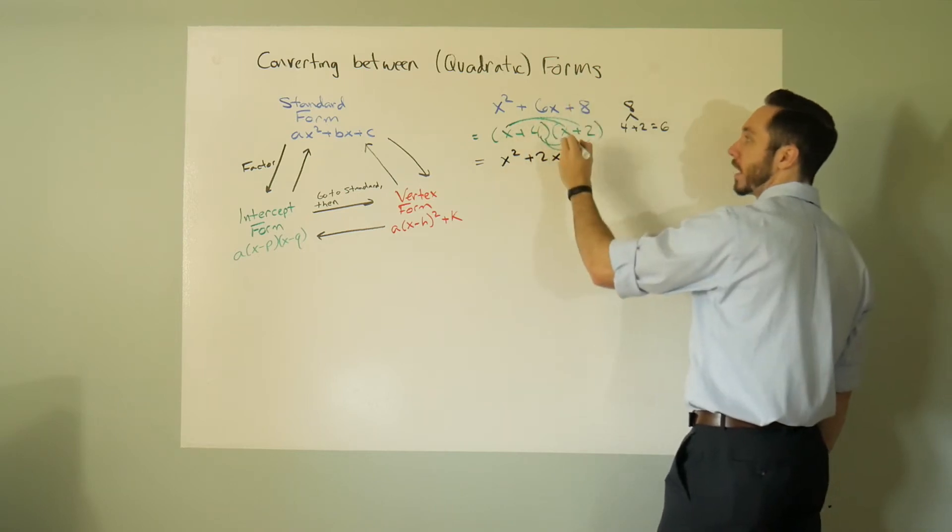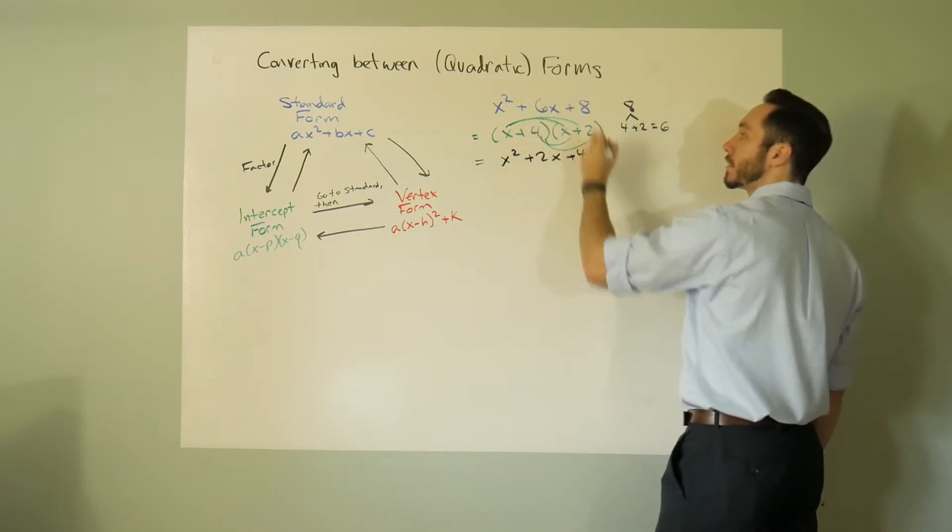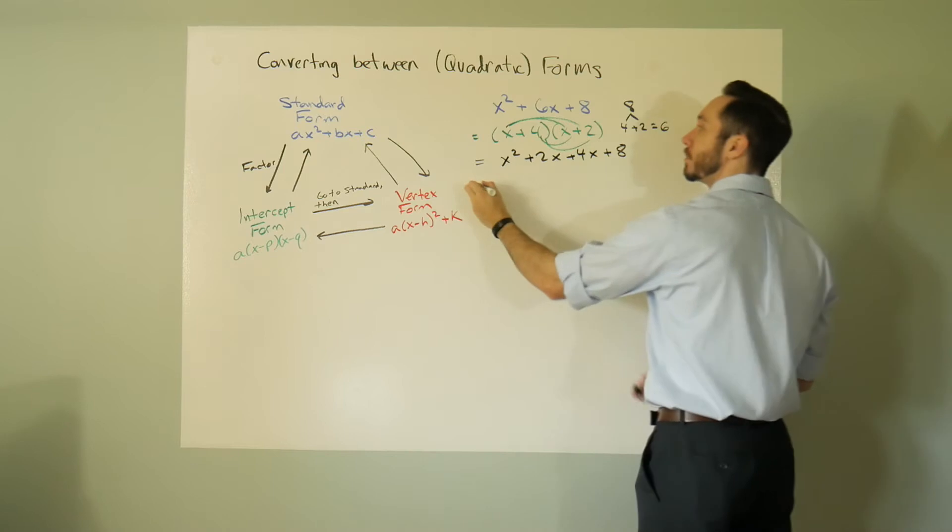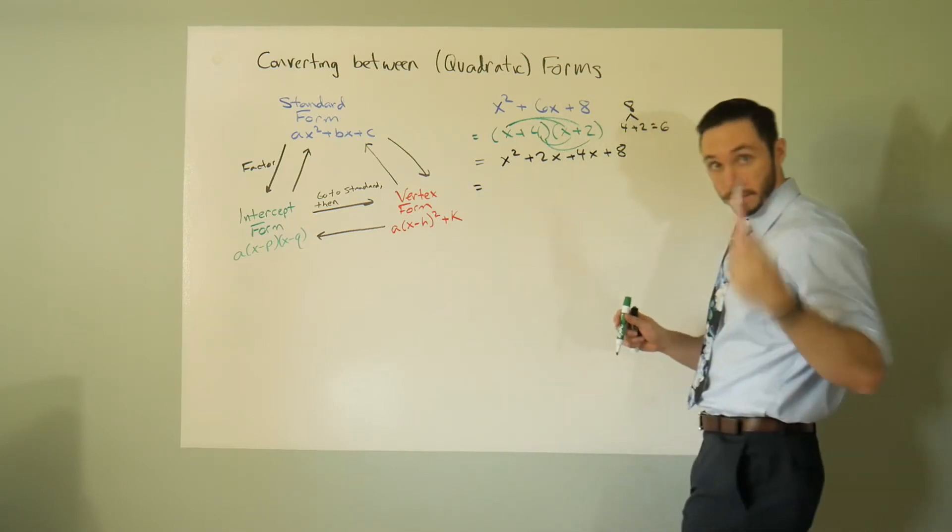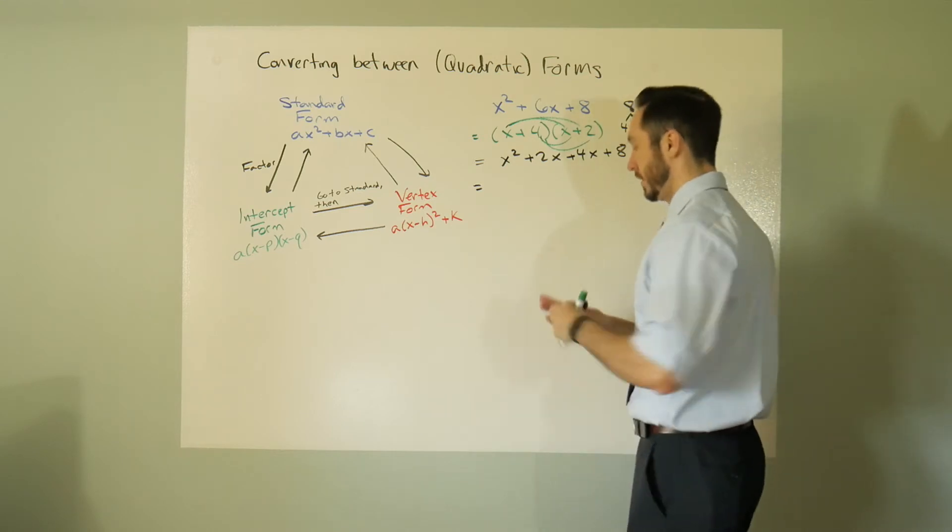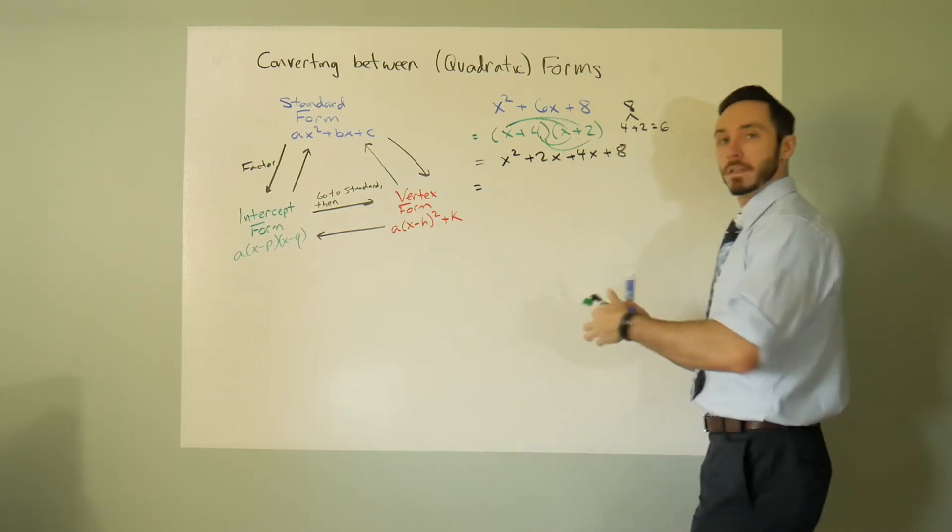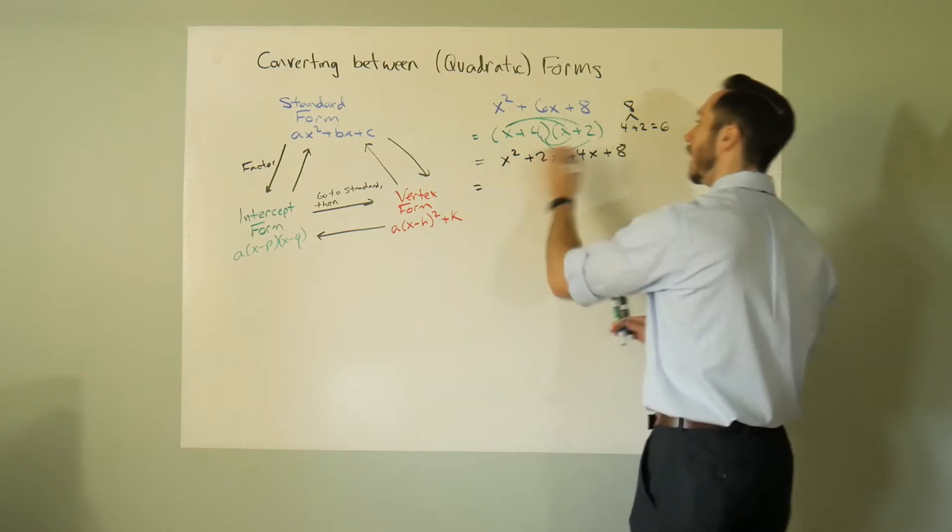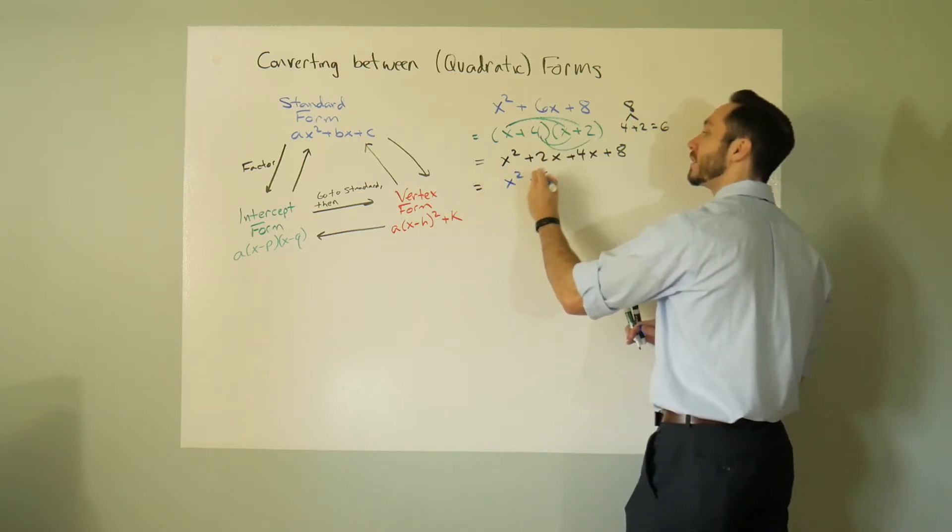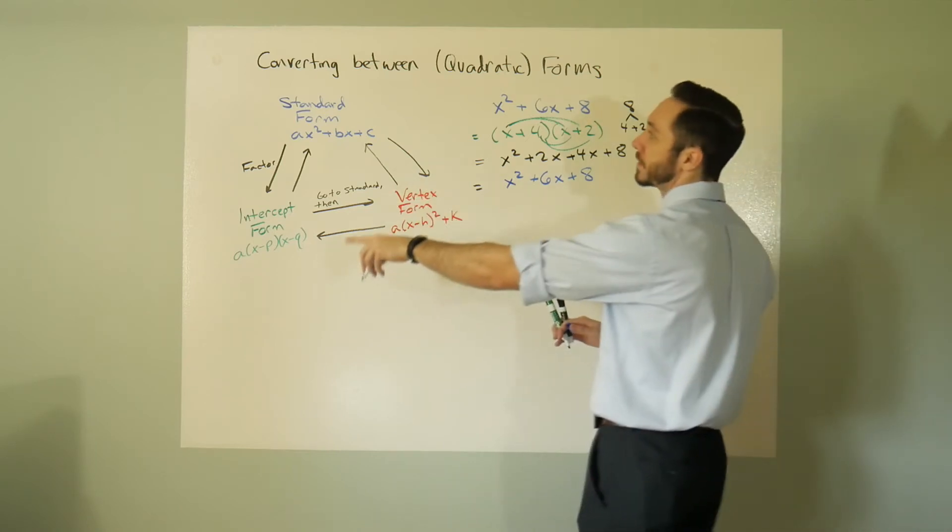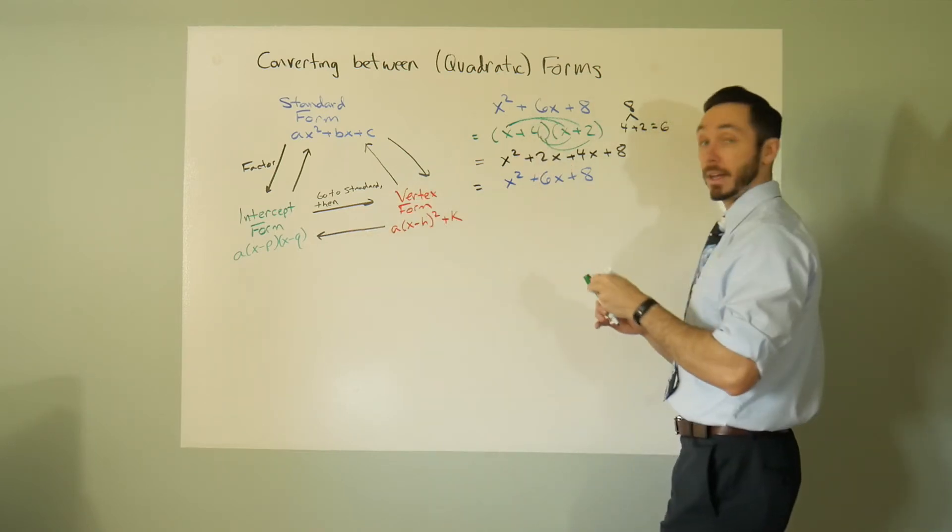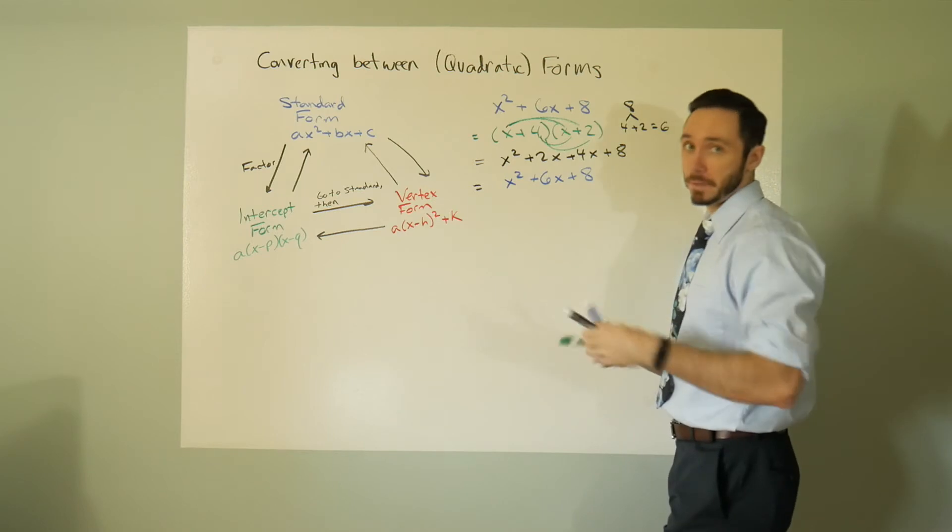4 times x is 4x and 4 times 2 is 8. So this would bring me to x squared plus 6x plus 8, so I'm back home. To go from intercept to standard, we just multiply, you distribute.